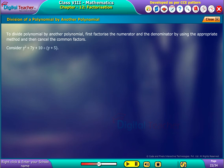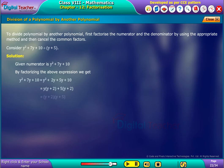Consider (y² + 7y + 10) divided by (y + 5). The solution is as follows. The given numerator is y² + 7y + 10. By factorizing the above expression, we get the factors (y + 2) and (y + 5). By dividing the obtained factors by (y + 5), finally we get y + 2.